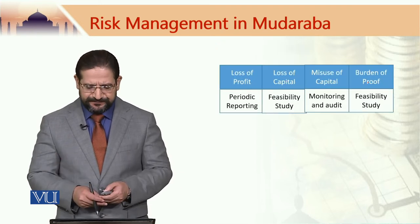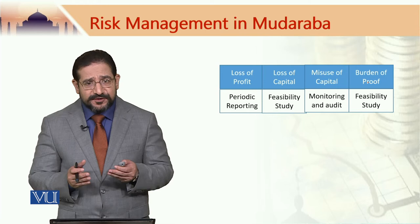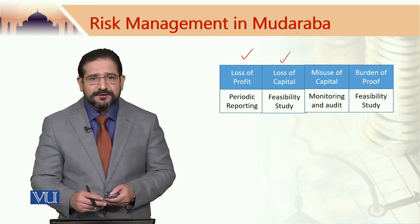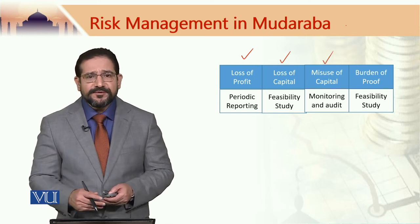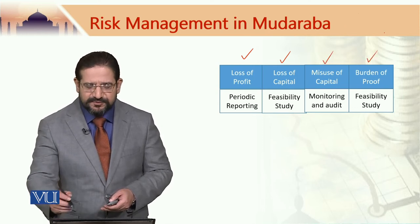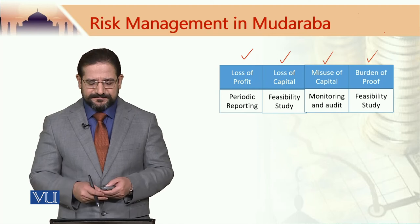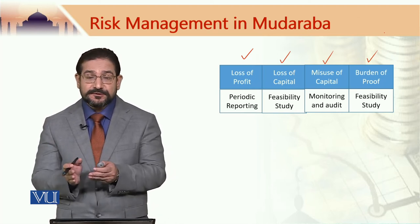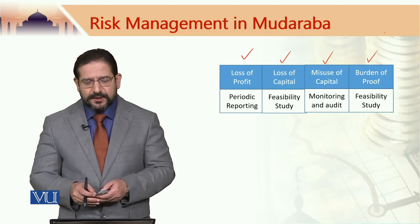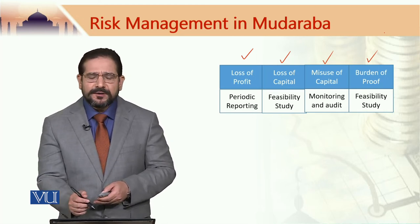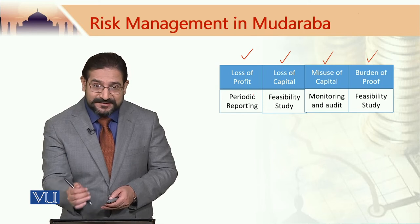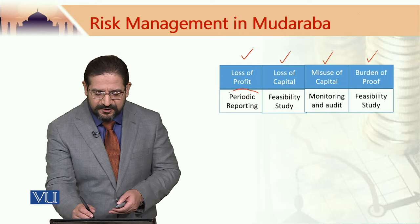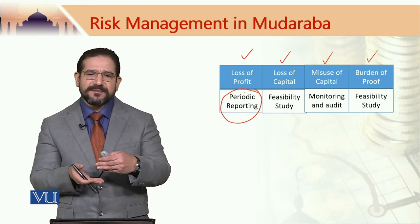In summary, the risks in Mudarabha are: loss of profit, loss of capital, misuse of capital, and burden of proof. Now, what are the control mechanisms to manage these risks? To ensure that profit is not underreported or misreported, periodic reporting may be required. This is a risk management tool.